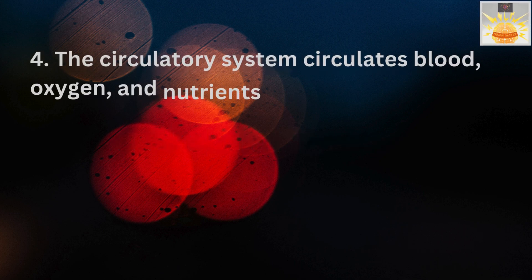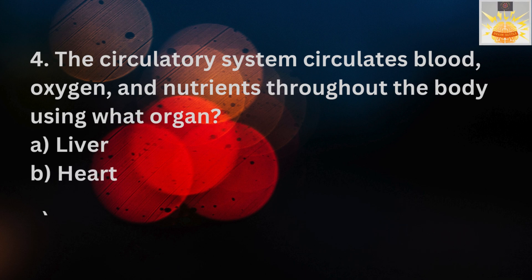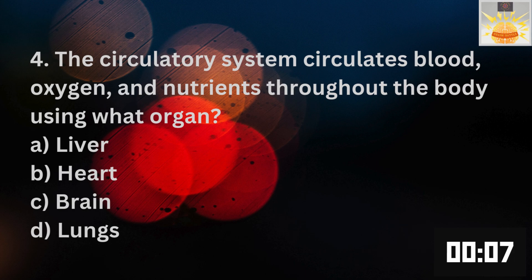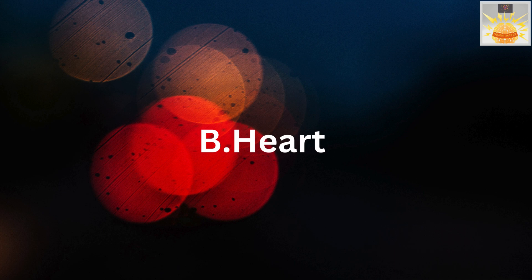Question 4. The circulatory system circulates blood, oxygen, and nutrients throughout the body using what organ? A. Liver. B. Heart. C. Brain. D. Lungs. Yes, indeed. The answer is the heart.